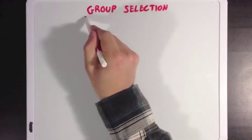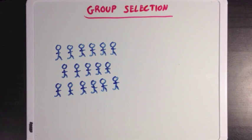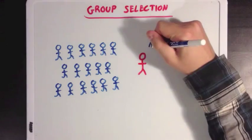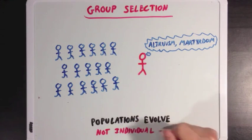And this is the idea that genetic traits that benefit the population, or group as a whole, will still be selected for even if they don't directly increase the fitness of the individual with the trait. Words like altruism and martyrdom come to mind. And traits that relate to these ideas are what we're talking about when we think of group selection. And these traits can still be selected for because entire populations evolve, not just individual members.